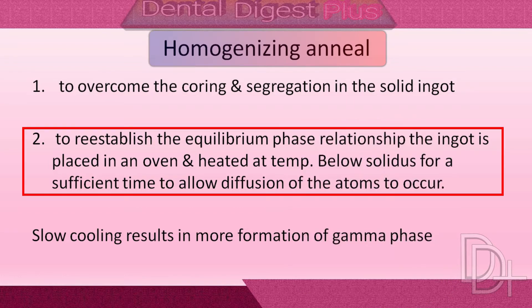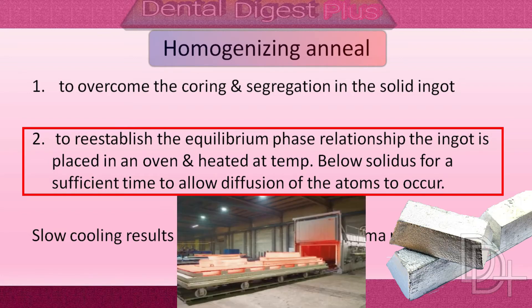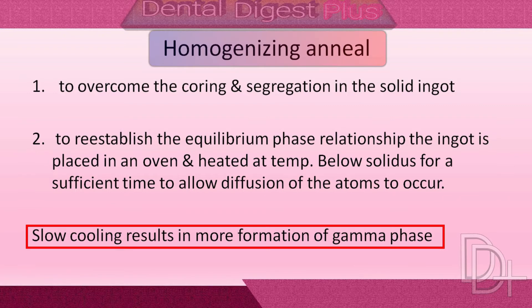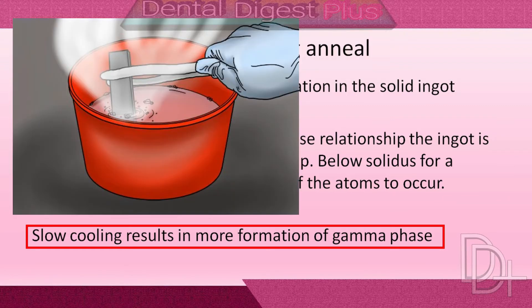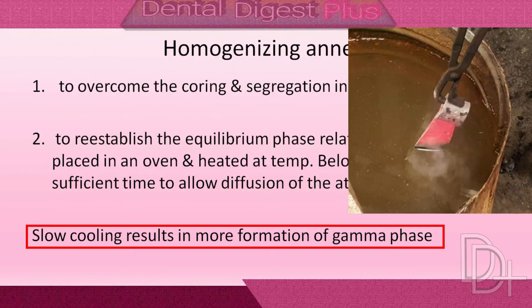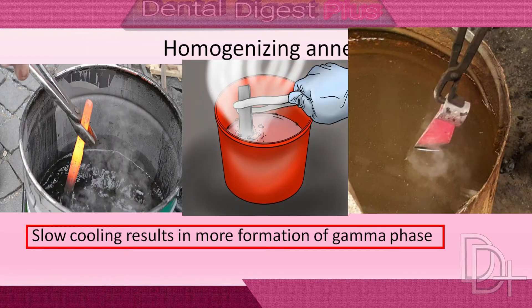To re-establish the equilibrium phase relationship, the ingot is placed in an oven and heated at a temperature below the solidus for a sufficient time to allow diffusion of the atoms to occur. The manner in which the ingot is cooled influences the proportion of phases present after cooling. If the ingot is withdrawn rapidly and quenched, the phase distribution remains essentially unchanged.